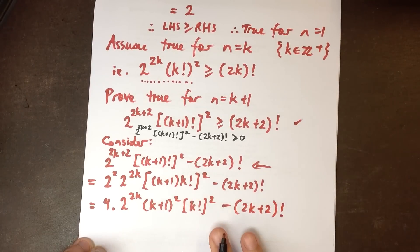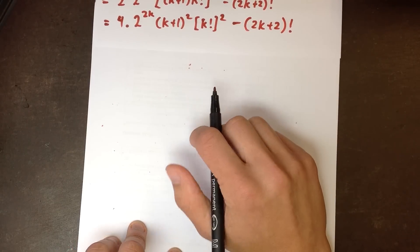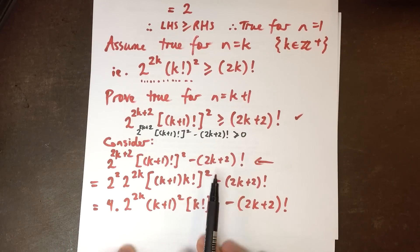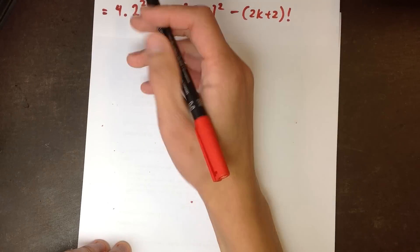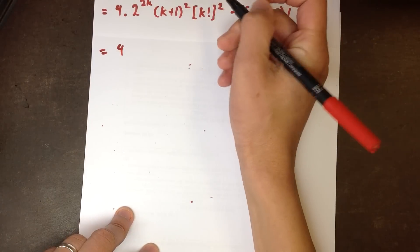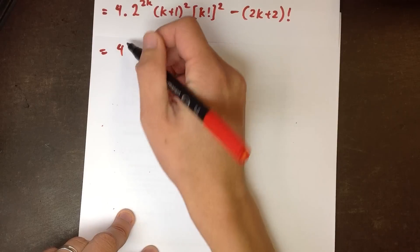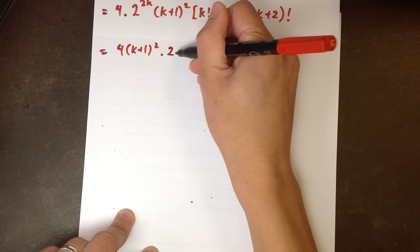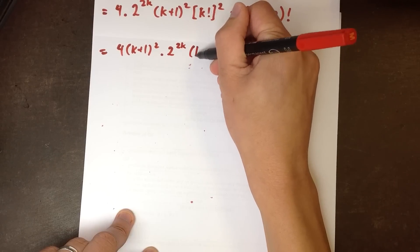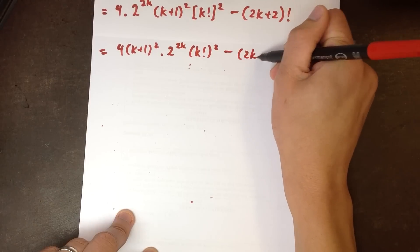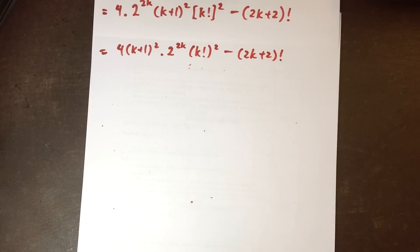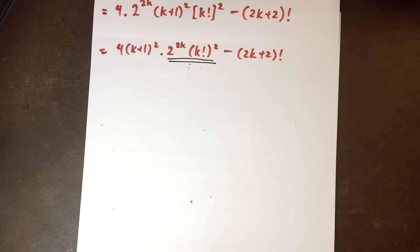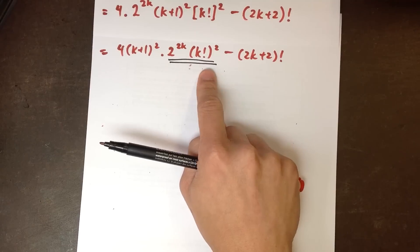Now I want to write these parts together: I have 4 times k plus 1 squared, multiplied by 2 to the 2k times k factorial all squared. Now watch this — this is the tricky part. In terms of logic this is what's confusing. Look at that piece: 2 to the 2k times k factorial squared. On the basis of my assumption, I can know something about this piece — namely that it's bigger than 2k factorial.